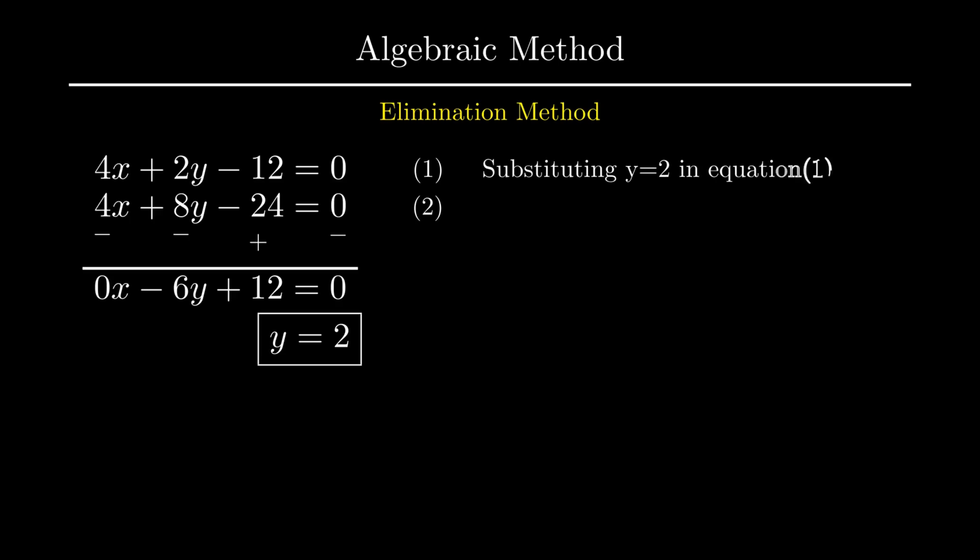Now substitute y as 2 in any one of the equations. For now let us substitute y as 2 in equation number 1. On simplifying it by the rules of transposing x is obtained as 2. Thus x equal to 2 and y equal to 2 is the only solution of the given pair of linear equations.